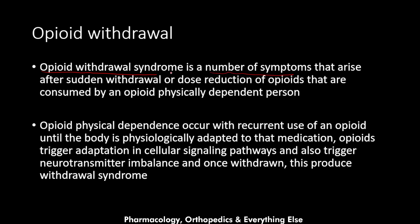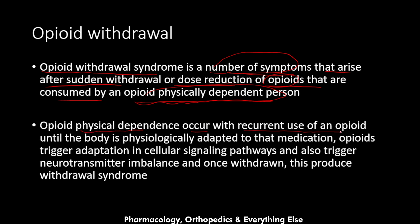Opioid withdrawal syndrome is a number of symptoms that arise after sudden withdrawal or dose reduction of opioids consumed by an opioid physically dependent person. Physical dependence to opioids occurs with recurrent use until the body is physiologically adapted to that medication. Opioids trigger adaptation in cellular signaling pathways and neurotransmitter imbalance, and once withdrawn, this disrupts cellular signaling and produces the withdrawal syndrome.